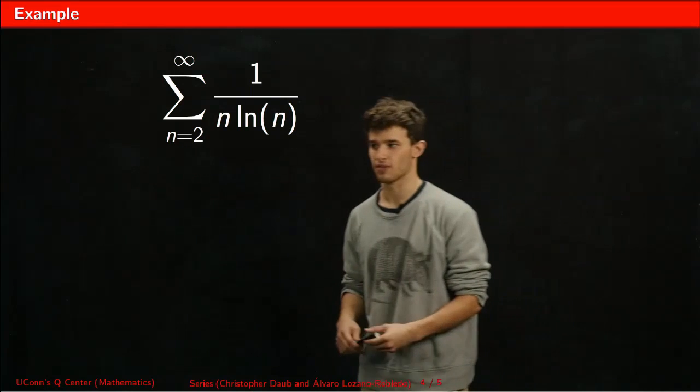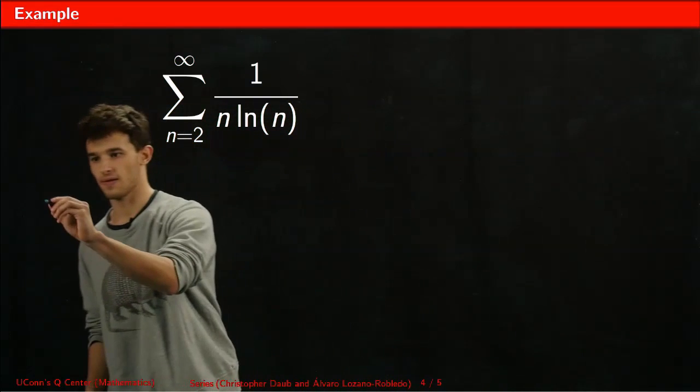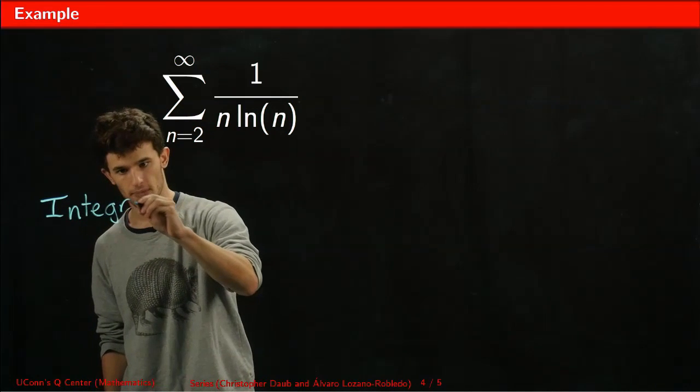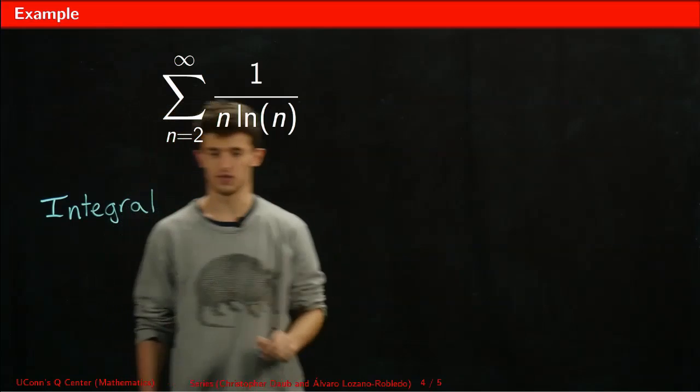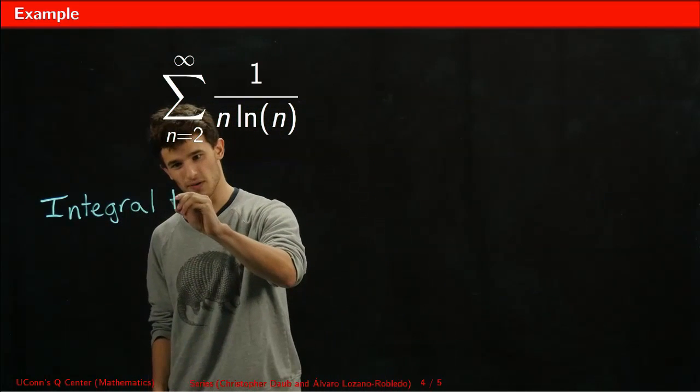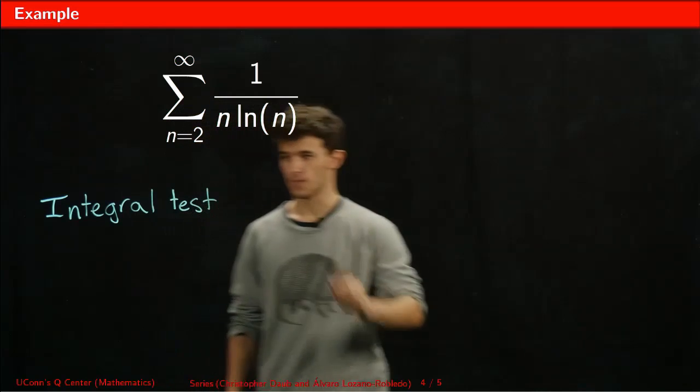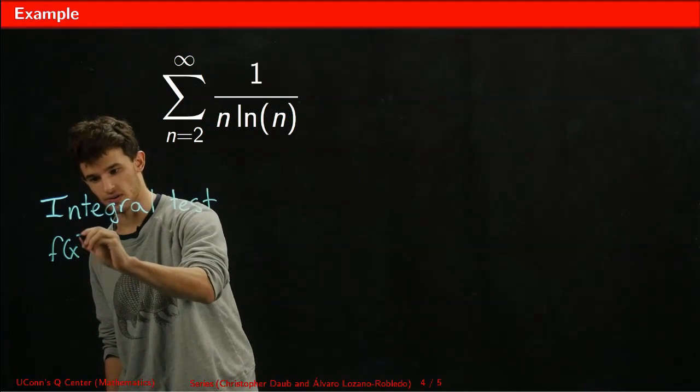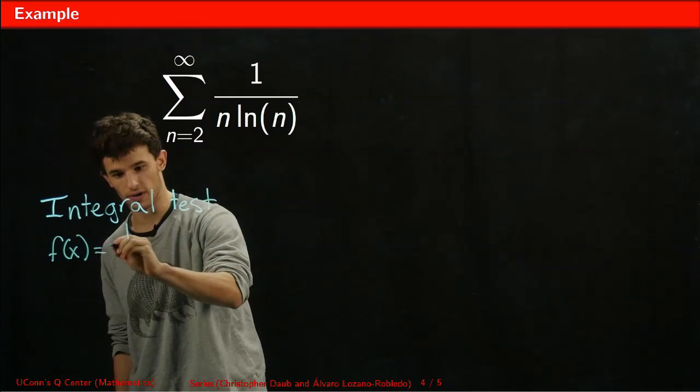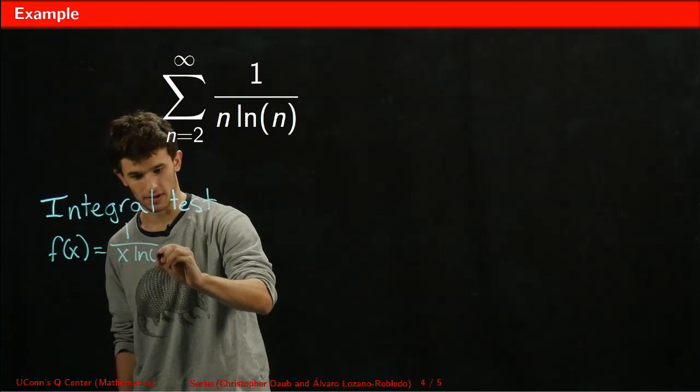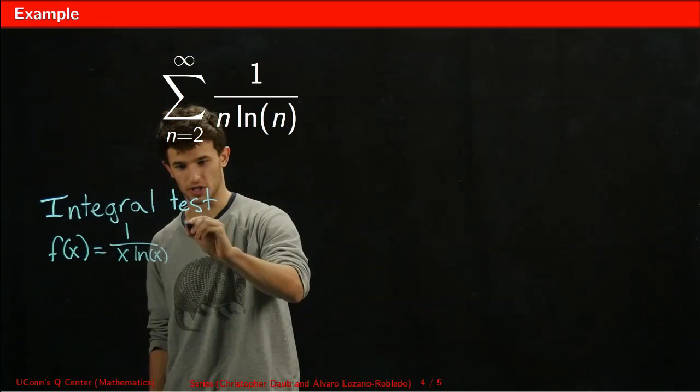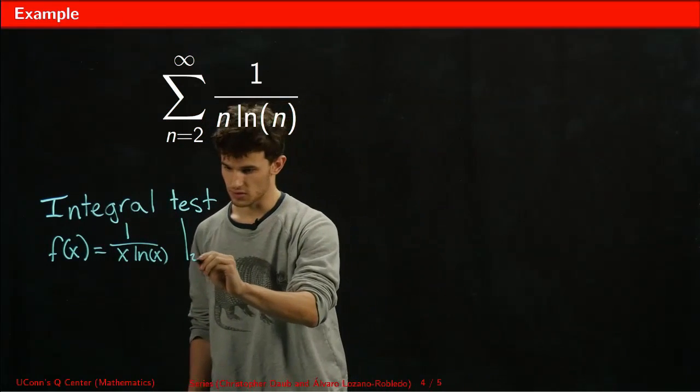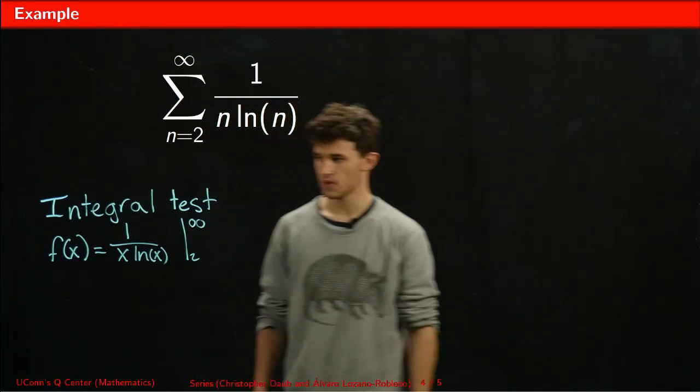It looks like we're going to have to move on to the integral test. The first thing we need to do is model our series as a function. We have f(x) equals 1 over x ln(x) as our function, and our bounds are going to be the same as our series, 2 to infinity.